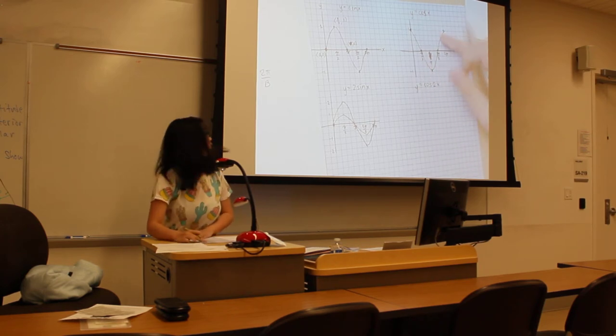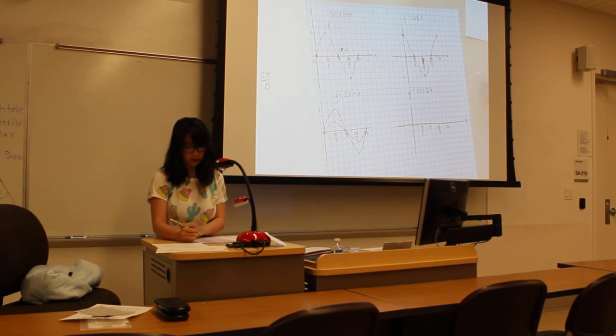Now for the period, the change in b. Let's graph y equals cosine 2x. So this is your normal graph. So what the cosine 2x graph would look like is, first you have to find the period.